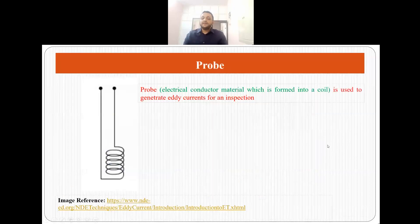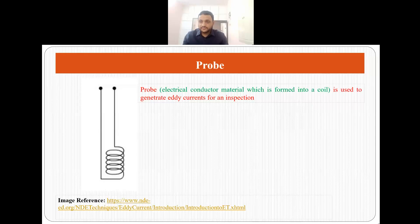Now in eddy current testing we use a probe. A probe is nothing but an electrically conducting material which is formed into a coil, and this probe we use to generate eddy currents, which can further be used for inspection.